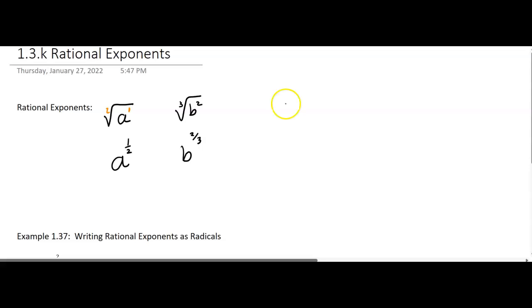Now here's the rule. If you have the nth root of a to the m, that is equal to a to the m over n. So your exponent here inside becomes the numerator and the index becomes the denominator. And then you're writing it with an exponent and not radical notation. So sometimes we'll say write it in radical notation or write it in exponential notation.